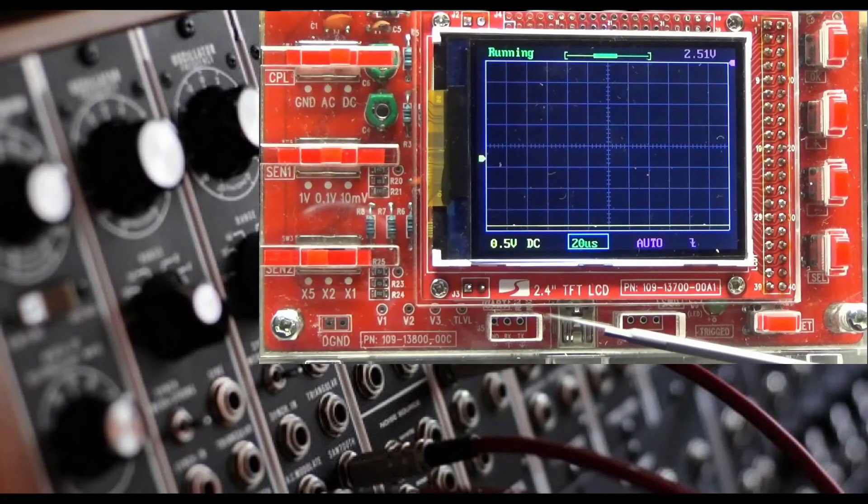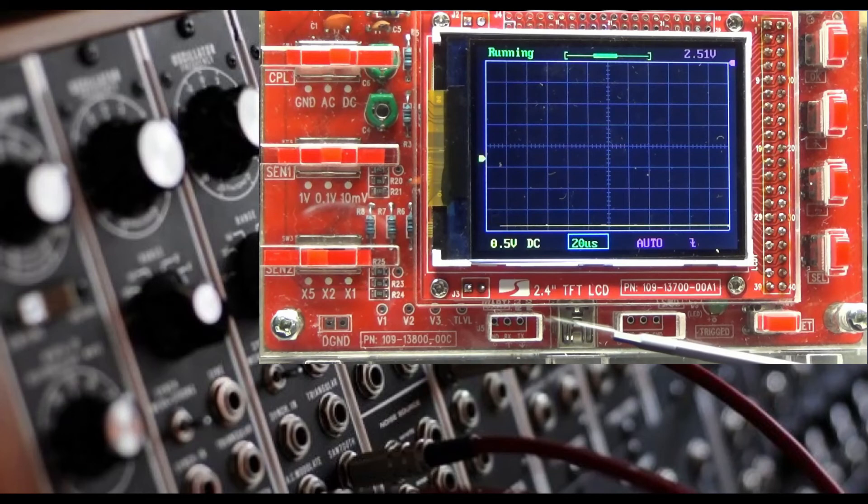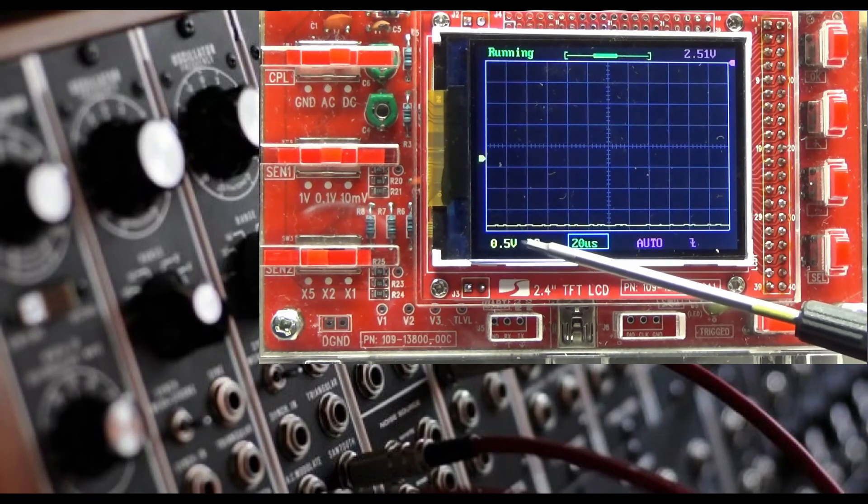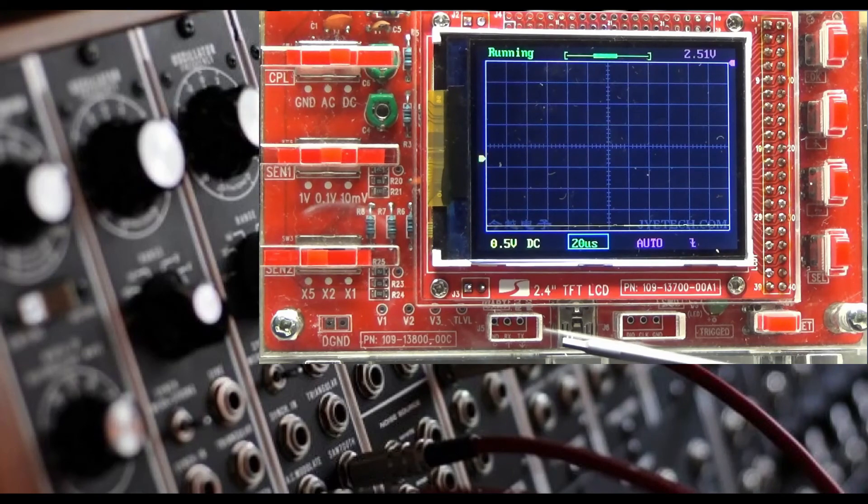These very simple testing methods can go a long way to help you troubleshoot problems in the event that you are having problems getting your synthesizer to work. Even with a cheap little $20 oscilloscope like this one, you can still roughly check the functionality of your synthesizer for digital information and other basic signals.